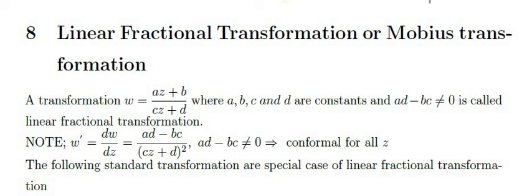Linear fractional transformation, also called Möbius transformation: a transformation w = (az + b)/(cz + d), where a, b, c, d are constants and ad − bc ≠ 0. The derivative dw/dz = (ad − bc)/(cz + d)² by the quotient rule. Since ad − bc ≠ 0, this derivative is never zero, which implies conformality for all z.